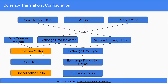To the translation method, we also assign a selection. Selection is used to assign the FS item type to the data, trying to assign the FS item type to the data.